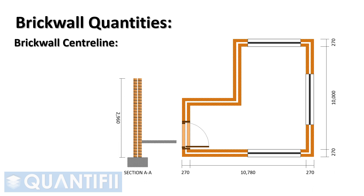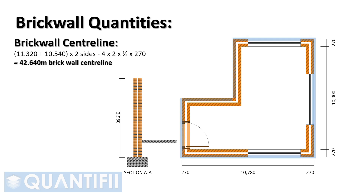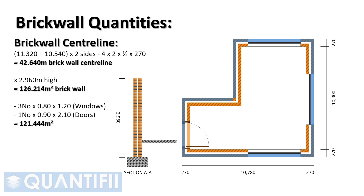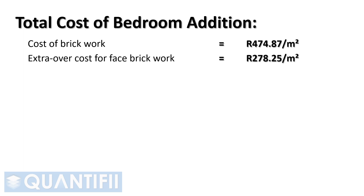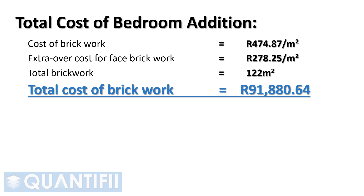Importing the sketch from the previous presentation on brickwork takeoffs, we can quickly calculate the brickwork area required. The brickwork centerline can be calculated using the external wall's perimeter less 4 by 2 by half the wall thickness, which equals 42.64 meters, multiplied by a height of 2.96 meters, less the adjustments for door and window openings, equals 121.444 square meters — which we round up to 122 square meters. The cost of brickwork is 474 Rand and 87 cents per square meter, plus 278 Rand and 25 cents per square meter for the extra over cost of face brickwork, multiplied by 122 square meters. Therefore the total cost of brickwork for the additional structure is 91,880 Rand and 64 cents.